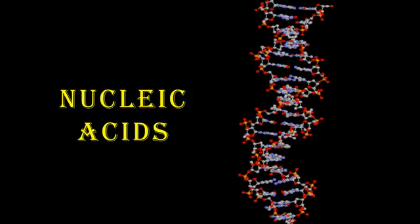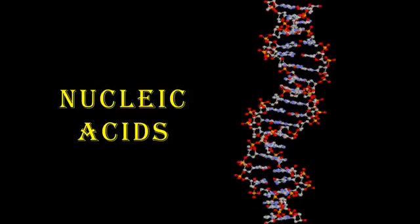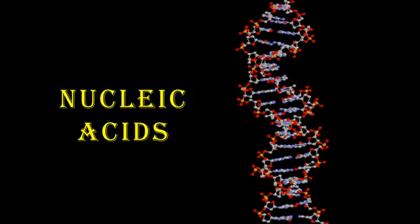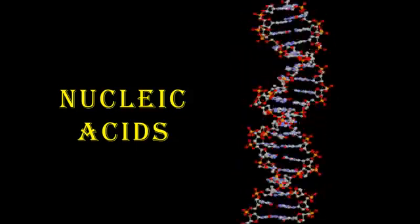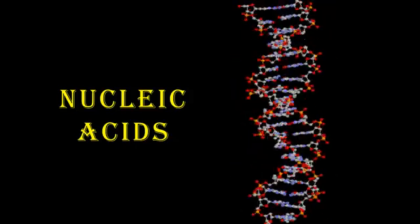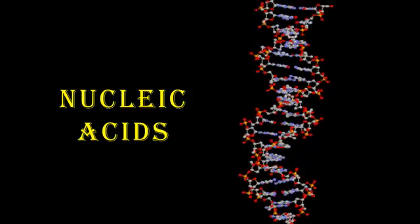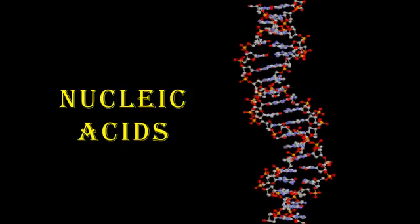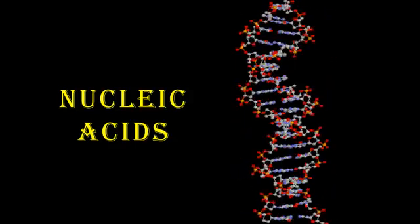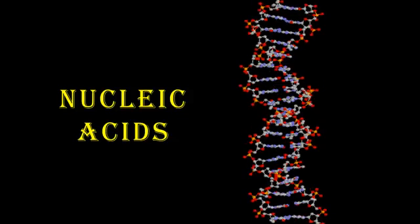These were given the name nucleic acids because when they were first discovered, people didn't really know what these things were. They knew that they were mildly acidic — a very weak acid — and that they're found in the nucleus of the cell, so they called them nucleic acids. It was much later that people realized the significance of this substance, and it wasn't really until 1953 that Watson and Crick determined that this was indeed the blueprint for life.